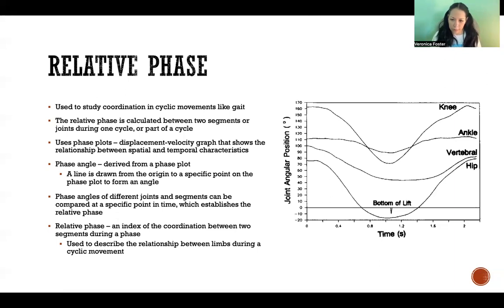And by comparing those angles at that specific point in time, then we get relative phase. So relative phase is an index of the coordination between the different segments during that specific phase, and that helps us describe the relationship between limbs during a cyclic movement.